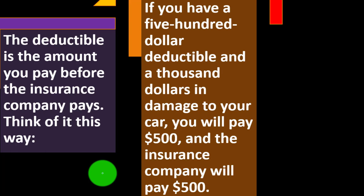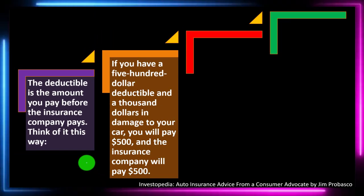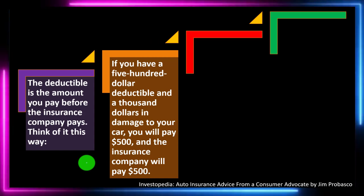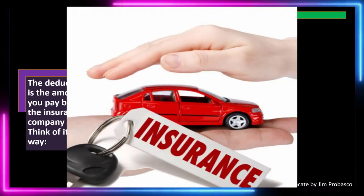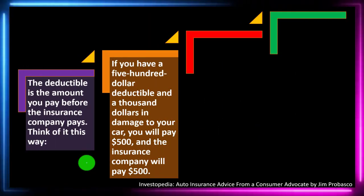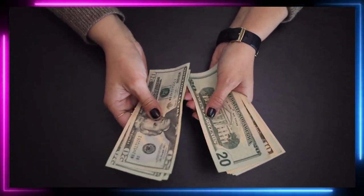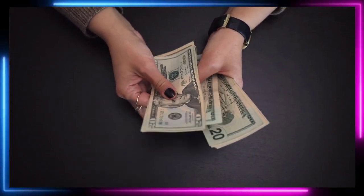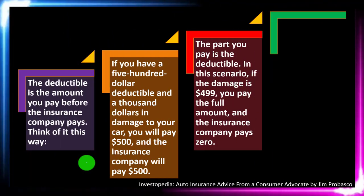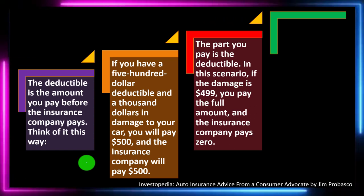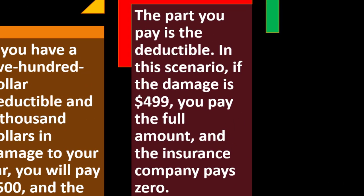If you have a $500 deductible and $1,000 in damage to your car, you will pay $500 and the insurance company will pay $500. This is the type of insurance that's basically on your property. Liability insurance covers the other person's property in the event you're at fault. The deductible applies when you're trying to recoup for your own property — you pay some amount up front and the rest could be covered by insurance. This is typically not the required insurance by law; the required insurance is usually for the other person who is not at fault.